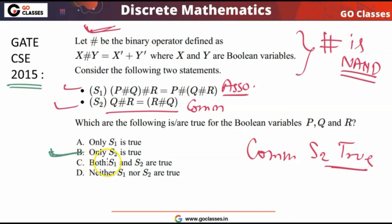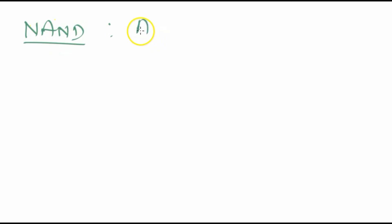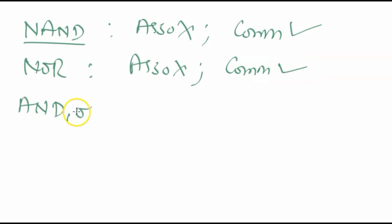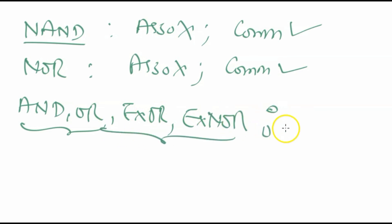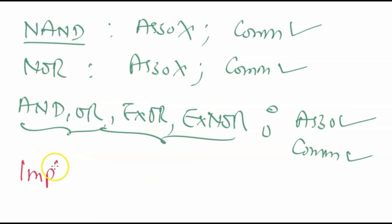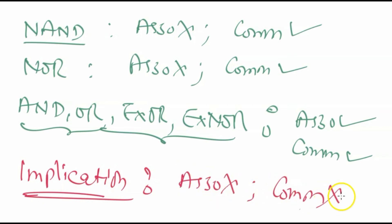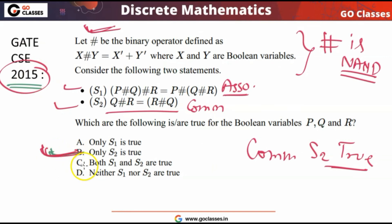So NAND is commutative but not associative — S1 is false and S2 is true, so the answer is option B. Similarly, NOR is also not associative but is commutative. AND, OR, EXOR, and EXNOR are all both associative and commutative. Implication, studied in propositional logic, is neither associative nor commutative. So for this GATE 2015 question, the answer is option B.